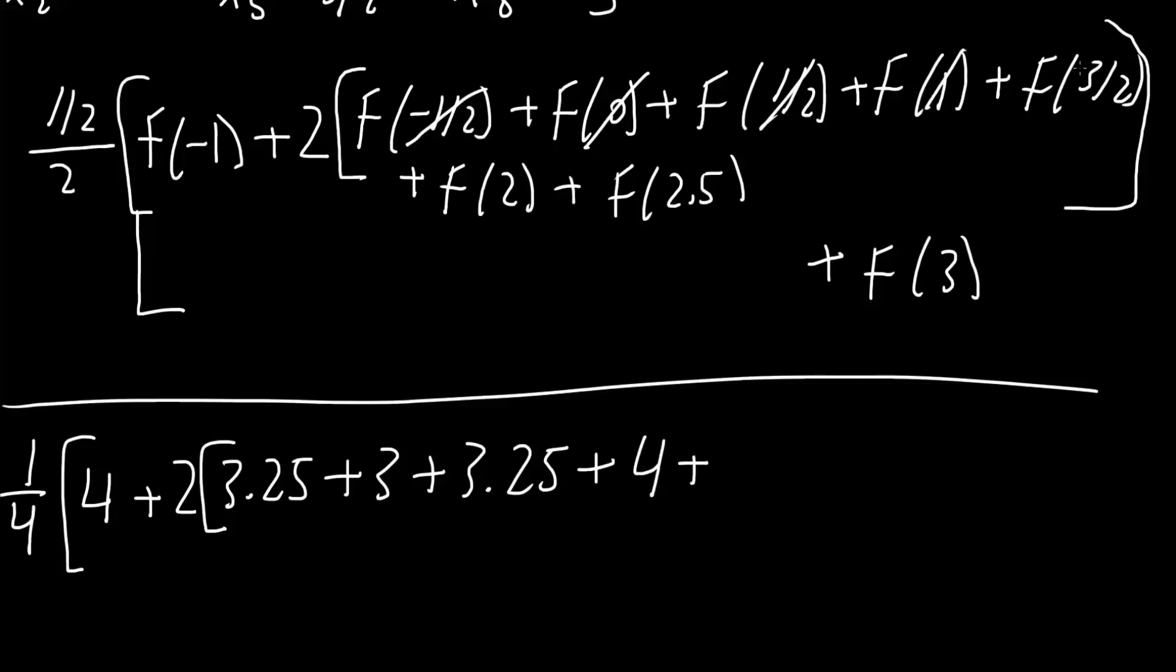Plus f 2.5 would be 9.25. Close this parentheses because this is being multiplied by 2, and plus f 3 which was 12. And finally we multiply this out, you can use a calculator, and you would get 21.5.